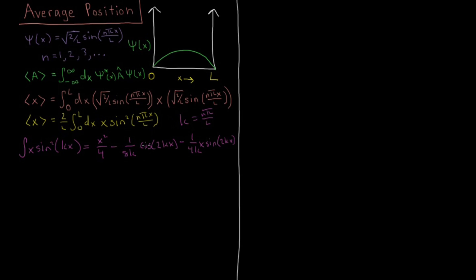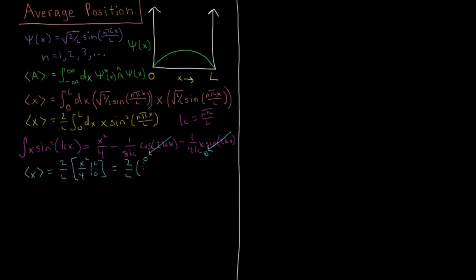For our specific case, substituting K equals NπL over L and evaluating at the endpoints 0 and L, the cosine term goes to zero at both limits because 2NπL over L gives us cosine of 2Nπ, and the sine term similarly cancels out at both ends. So those terms are zero. That simplifies our expression to 2 over L times X squared over 4, evaluated from 0 to L. At L we get L squared over 4, and at 0 we get zero. So we get 2 over L times L squared over 4.